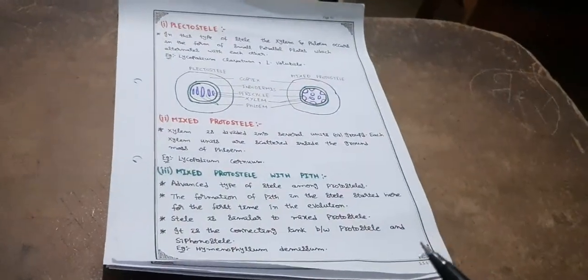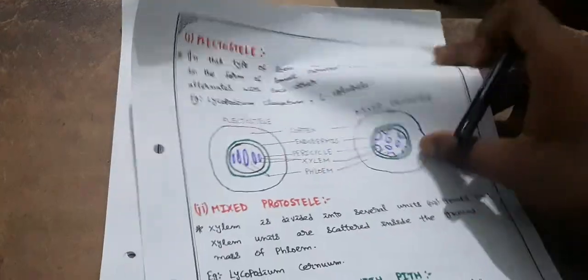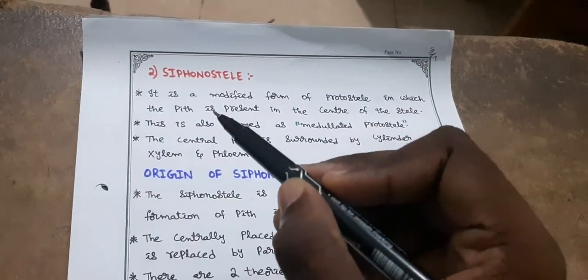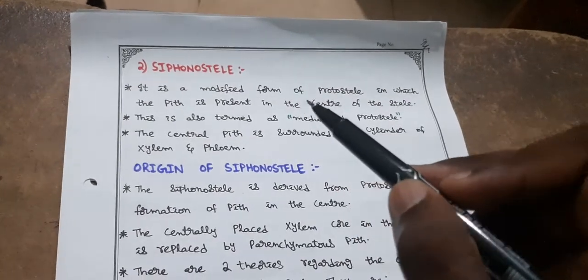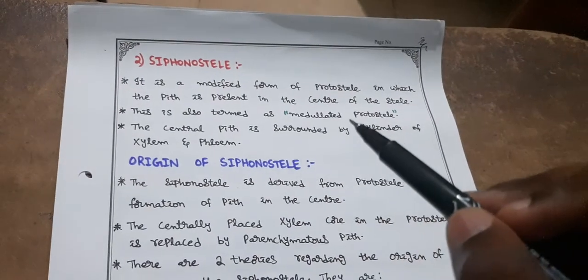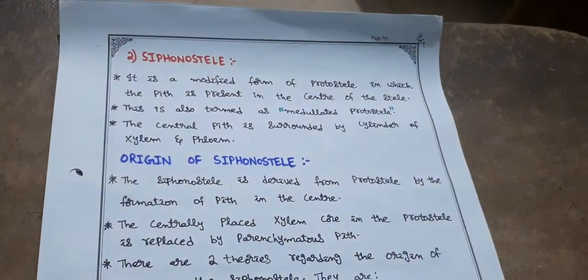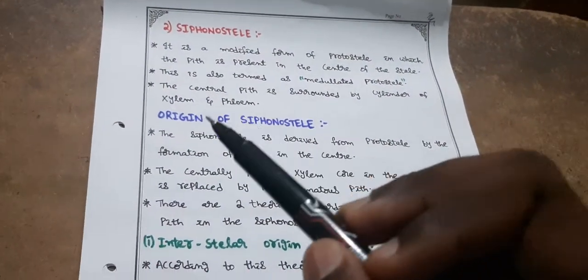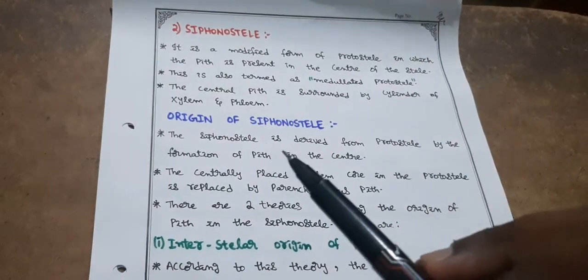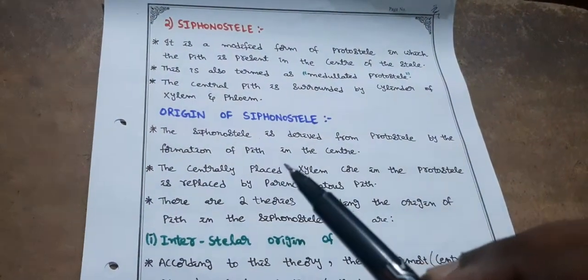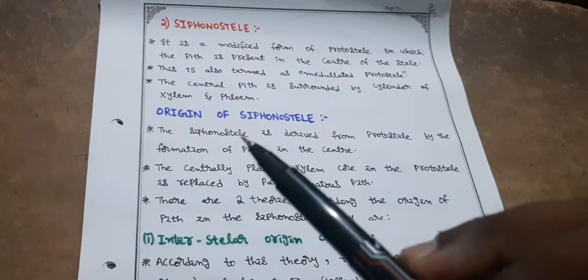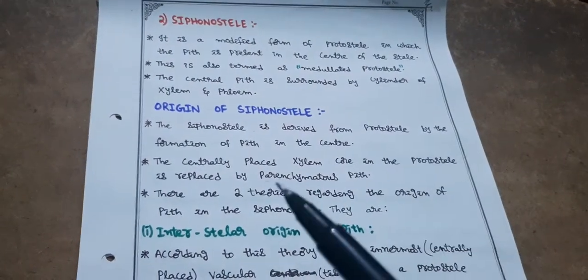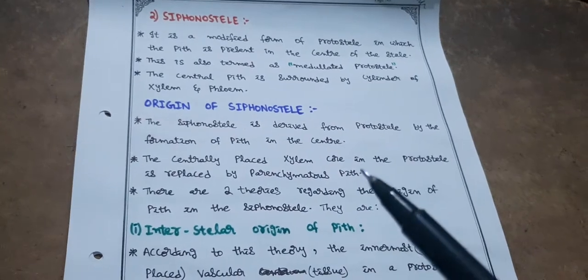Siphonostele is a modified form of protostele in which pith is present in the center of the stele; it is also termed medullated protostele. The central pith is surrounded by a cylinder of xylem and phloem. Siphonostele is derived from protostele by the formation of pith in the center — the centrally placed xylem core in the protostele is replaced by parenchymatous pith.